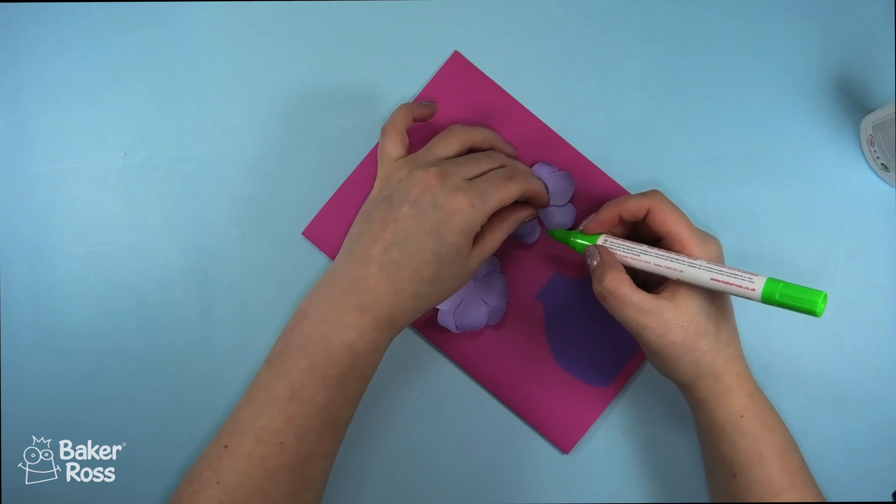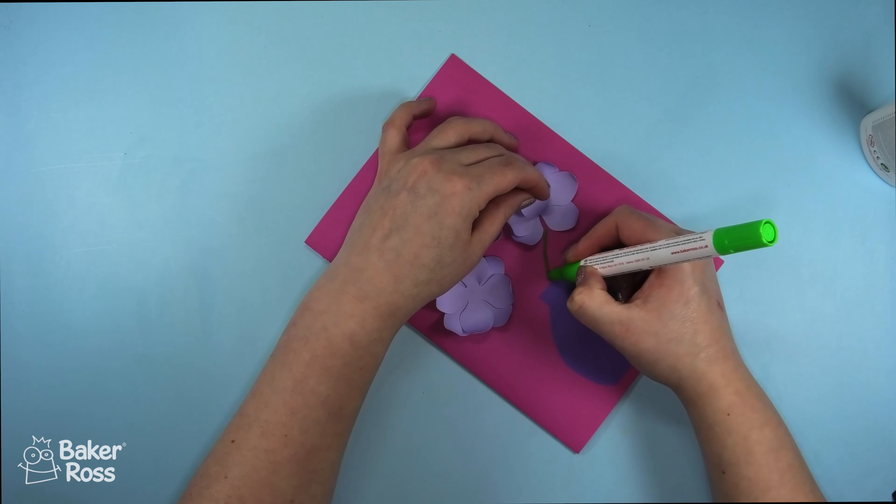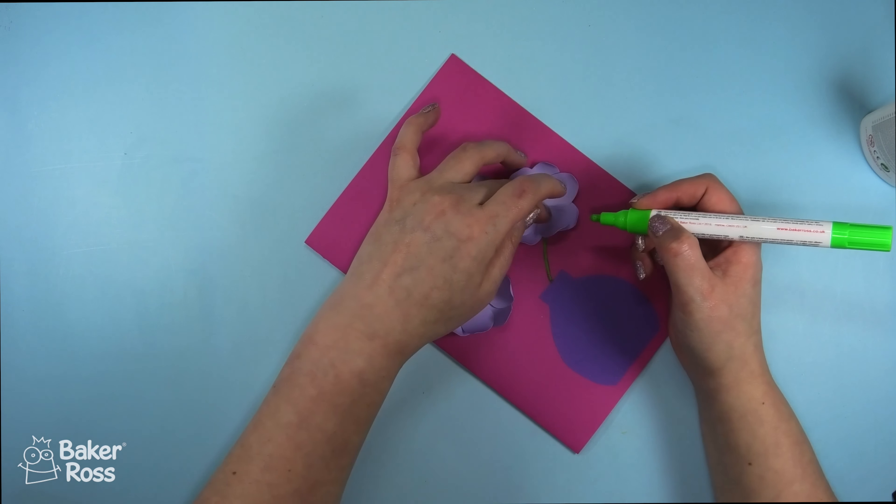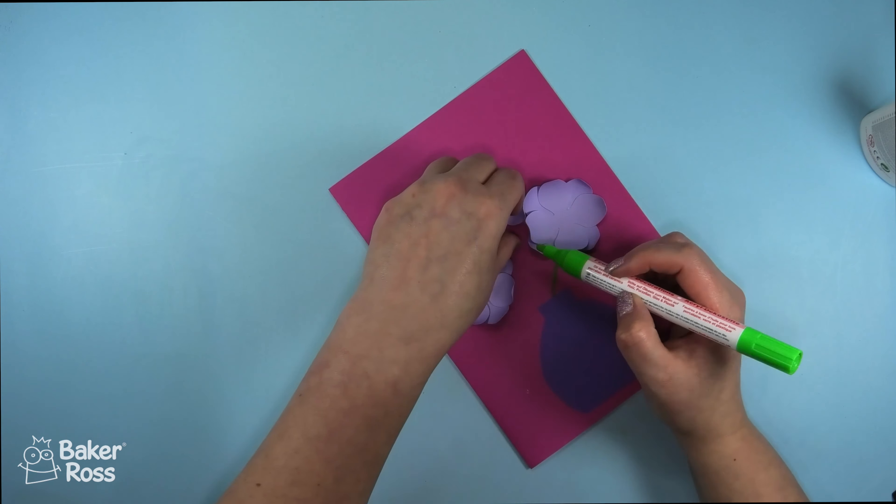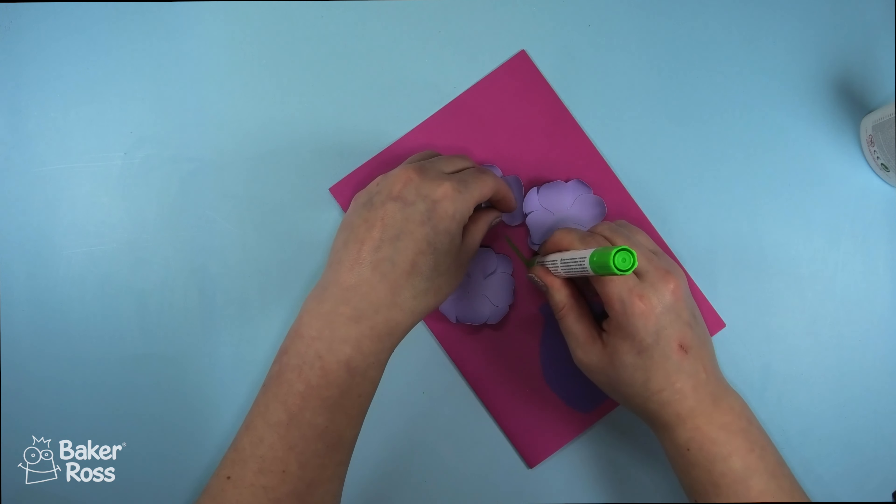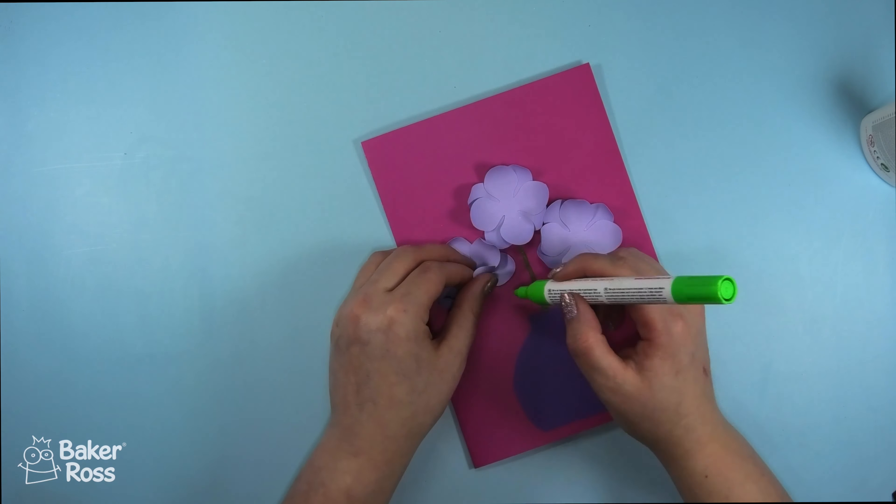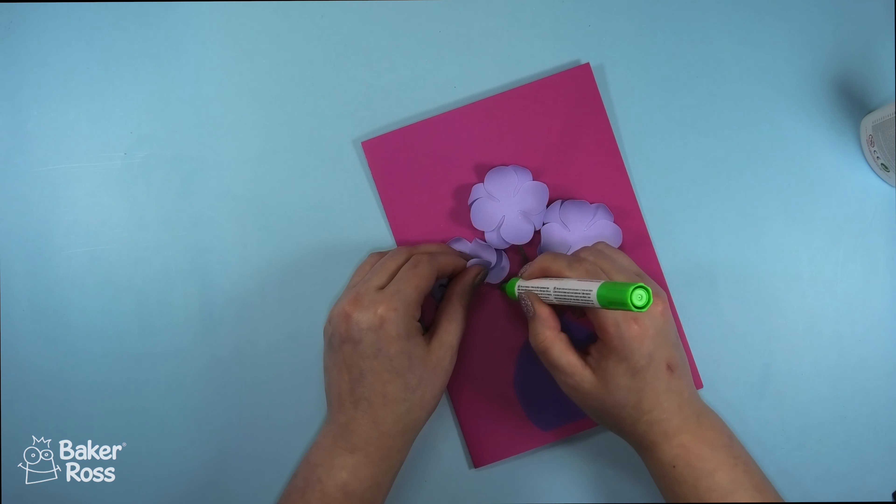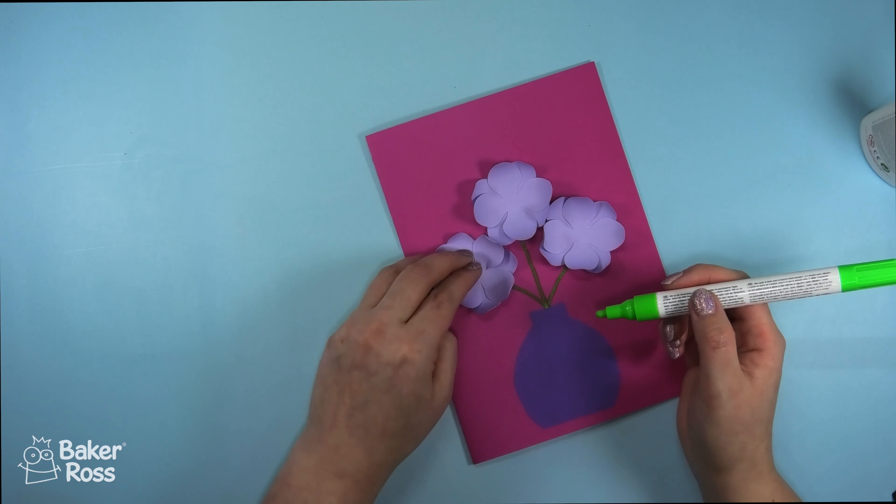Then we just need to add some flower stems. I'm using a green paint marker. You could definitely use a regular marker for this. It doesn't have to be a paint marker because it is just cardstock that you're drawing on but I had this handy on my desk so I decided to use it and you just want to draw a curve from each of those flowers into the vase.